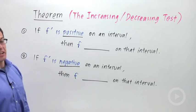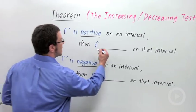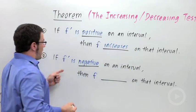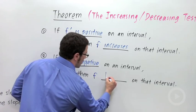If f prime is positive on an interval, then f increases on that interval. And if f prime is negative on an interval, then f decreases.